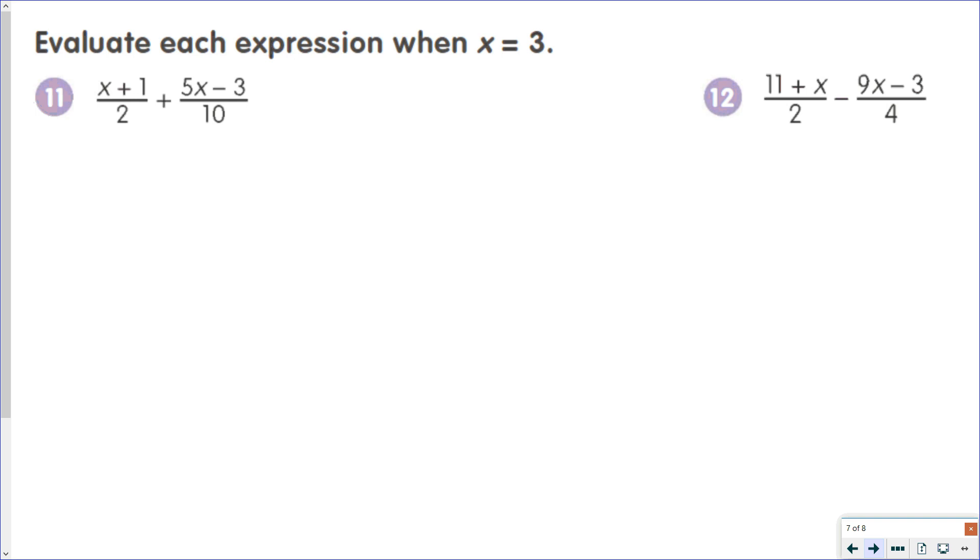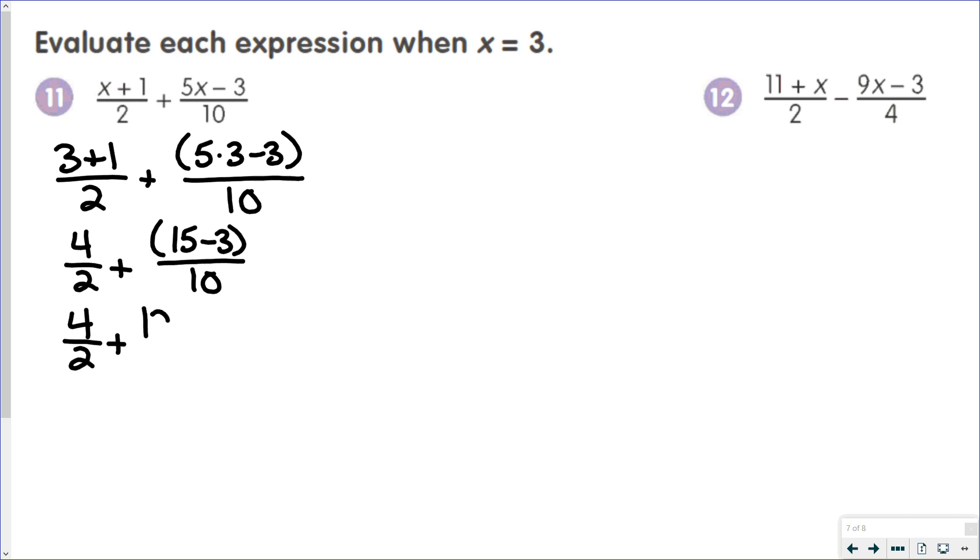Now, in this situation here, you'll notice that we have more than one variable, but the variable is the same. So they're both x's, which means anywhere we see an x, we're going to substitute that with a 3. So 3 plus 1 over 2 plus 5 times 3 minus 3 all over 10. 3 plus 1 is 4. 5 times 3 is 15. 15 minus 3 is 12. 4 over 2 is 2. 12 over 10 is 1 and 2 tenths. 2 plus 1 and 2 tenths is 3 and 2 tenths, which simplifies down to 3 and 1 fifth.